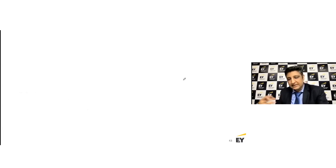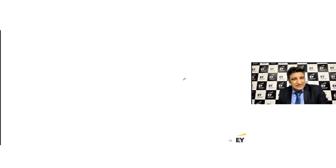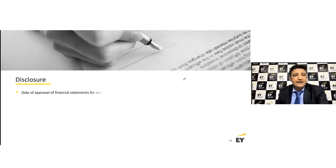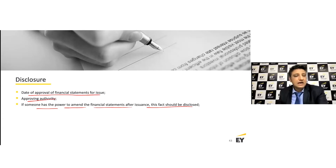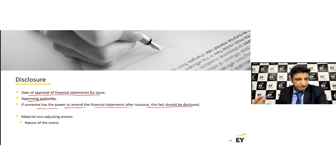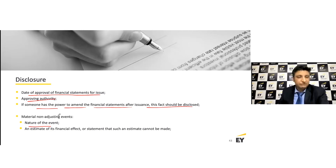So those were the special cases: breach of long-term liability conditions (a material breach), the going concern assumption validation, and the declaration of dividend — all coming through Ind AS 1 and being tested from the perspective of Ind AS 10 as well. On disclosures: you need to clearly disclose the date of approval of the financial statements, who the approving authority is, and if somebody apart from the board has the power to amend the financial statements after issuance, that fact also needs to be disclosed.